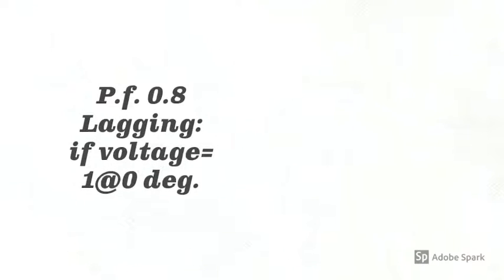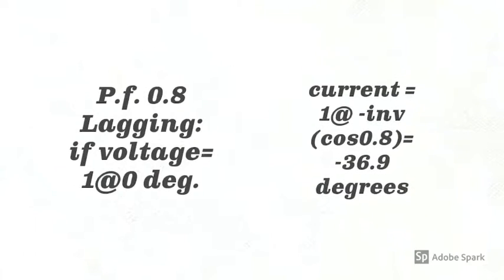For example, power factor 0.8 lagging, when voltage is 1 magnitude at 0 degree angle, the current is 1 magnitude at minus inverse cosine 0.8 degree, that is minus 36.9 degrees.